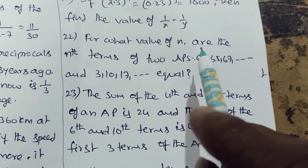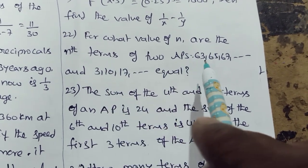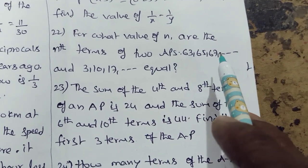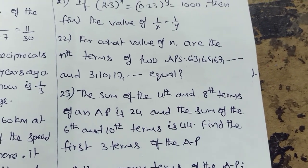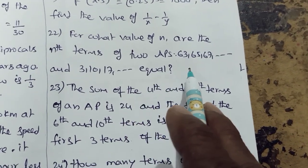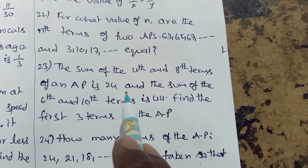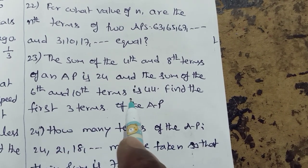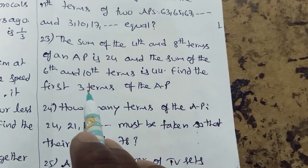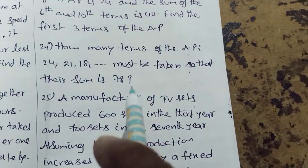Progressions. For what value of n are the nth terms of two APs 63, 65, 67 and so on, and 3, 10, 17 and so on equal? The sum of the 4th and 8th terms of an AP is 24 and the sum of the 6th and 10th terms is 44. Find the first 3 terms of the AP.